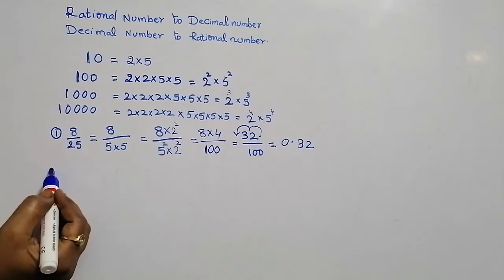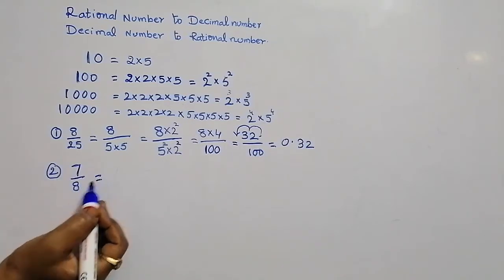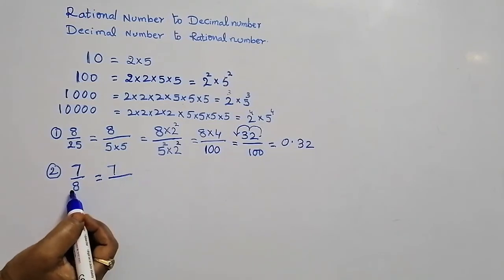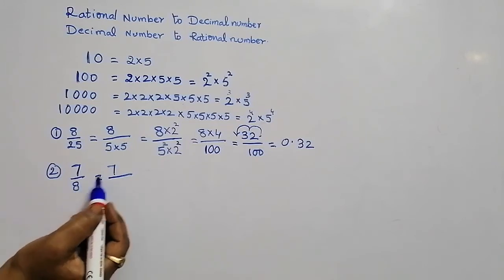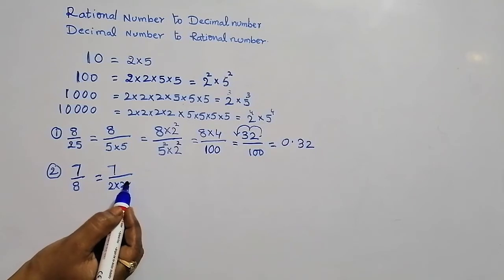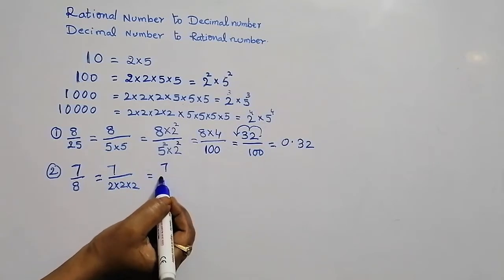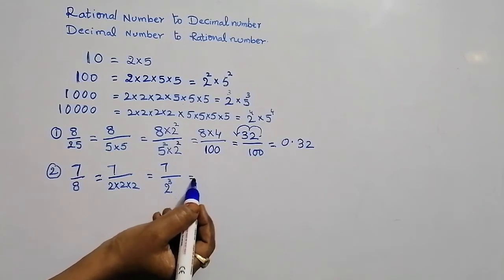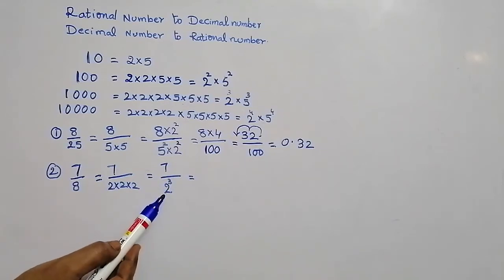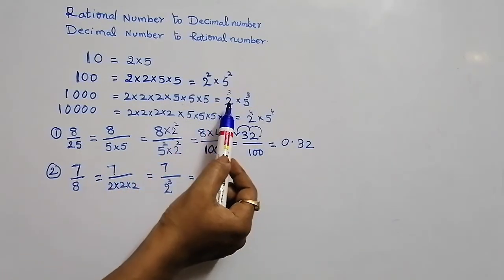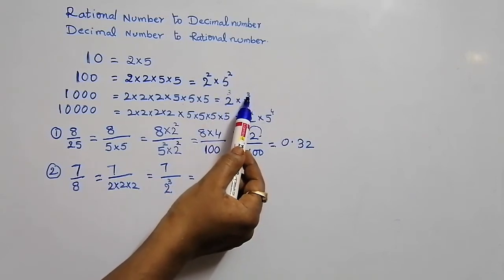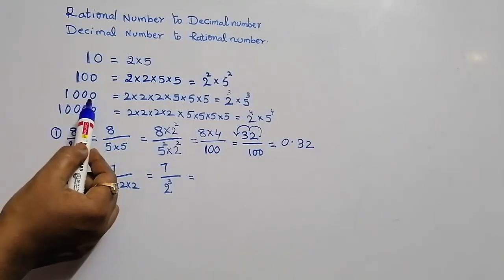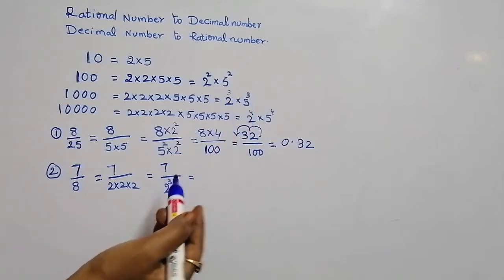Let us take another example: 7 by 8. The numerator is 7. The prime factorization for 8 is 2 into 2 into 2, that is 2 power 3. So this is 7 by 2 power 3. Now, 2 power 3 into 5 power 3 gives 1000, so we need to convert the denominator to 1000. We still need 5 cube.